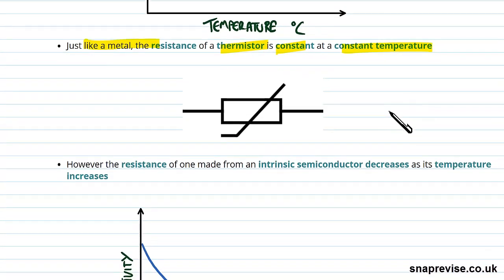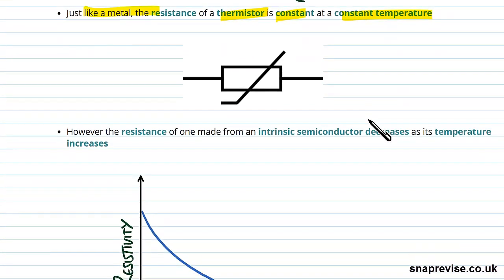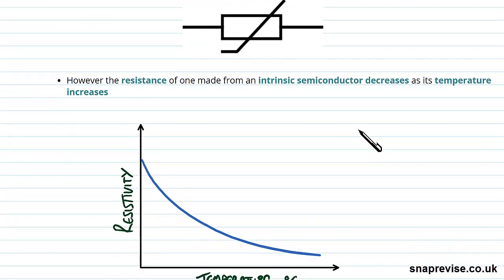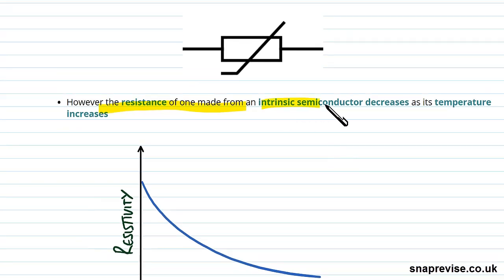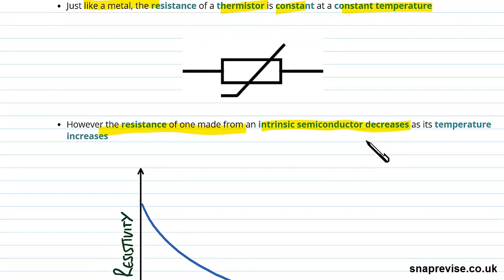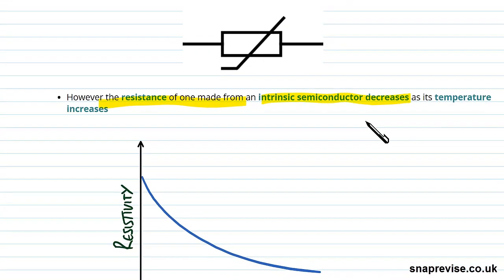However, for a thermistor, the resistance of one made basically from an intrinsic semiconductor decreases as its temperature increases. We talked about semiconductors previously.